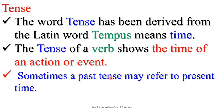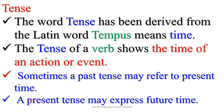Sometimes a past tense may refer to present time. Similarly, a present tense may express future time. It means that with the help of the past tense, we are able to say something about present time. Similarly, with the help of the present tense, we are able to say something about future time.